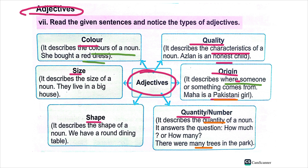Adjective of shape describes the shape of a noun. For example, 'we have a round dining table' — 'round' is the adjective of shape. Adjective of size describes the size. For example, 'they live in a big house' — 'big' is the adjective of size.